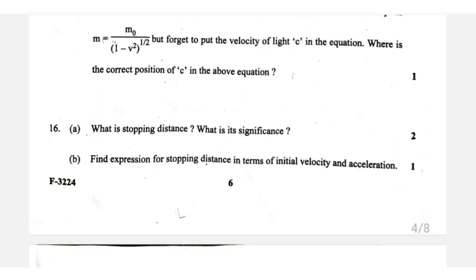Question number 16: stopping distance. The stopping distance is the distance covered by a vehicle after applying brakes. The equation is s equals u squared divided by 2a (with retardation, a is negative). The significance: stopping distance depends on the square of the initial velocity.